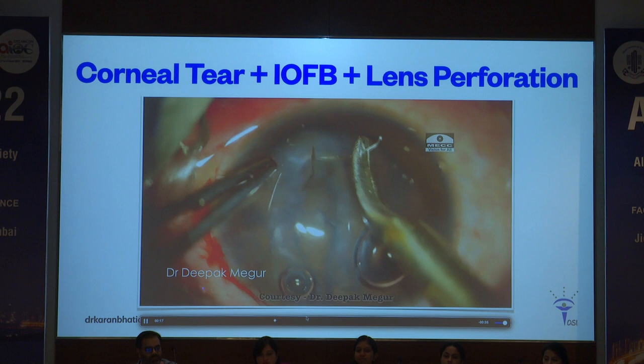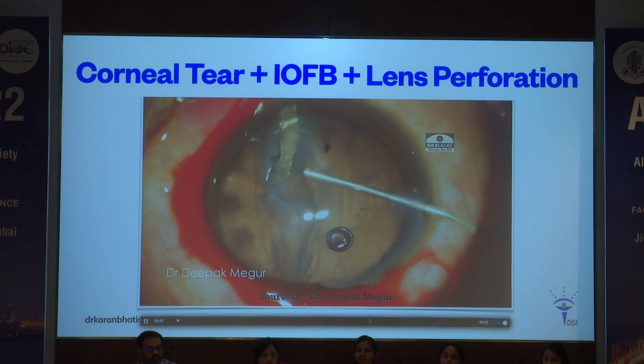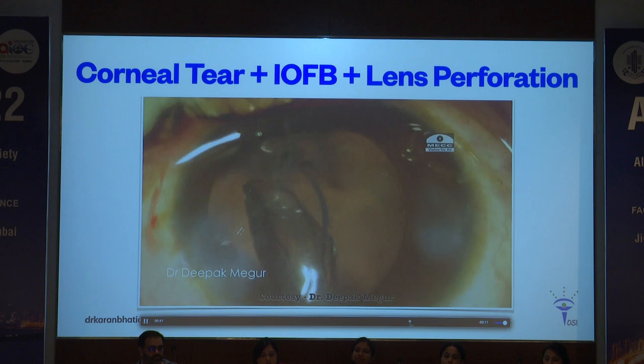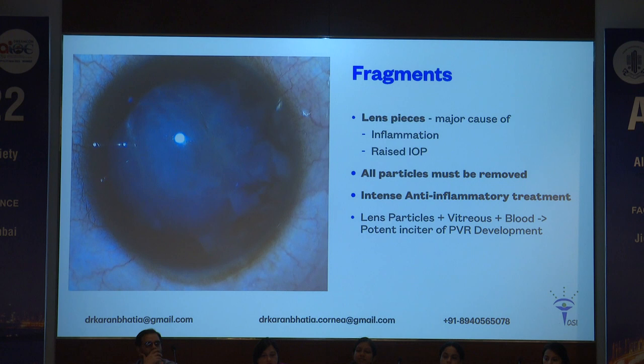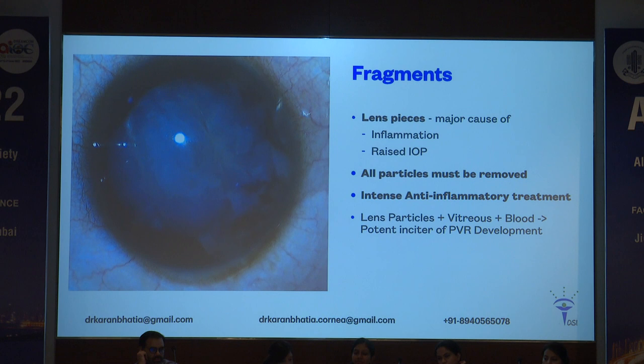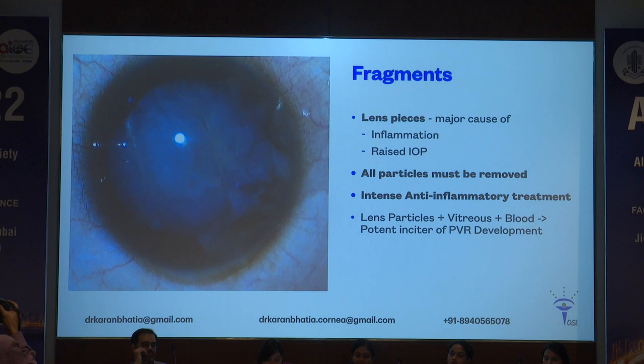Once that is done, the tear is sutured and in the same sitting he has put an IOL, then converted it into a rhexis — and the case did pretty well. Lens pieces are actually the major cause of inflammation and they cause rise in intraocular pressure. All material in the anterior chamber must be removed, and intense anti-inflammatory treatment is required. Once the wound is sealed, give steroids. Lens particles plus vitreous plus blood is a potent inciter of PVR development.